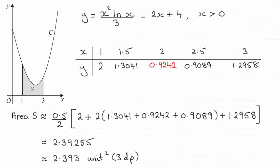Okay, so for this question then, we were given this curve C with this equation here, and asked to find the value when x was 2 to 4 decimal places, and you can see it's 0.9242.